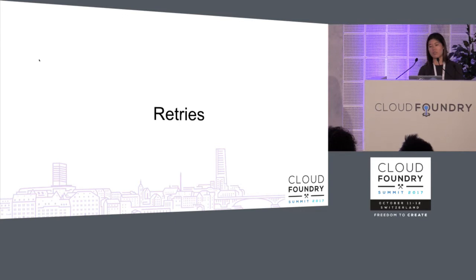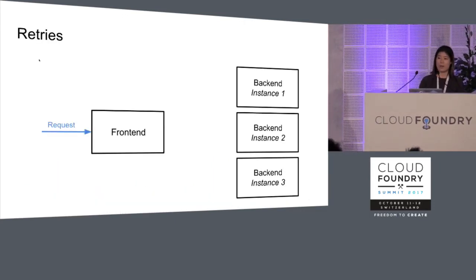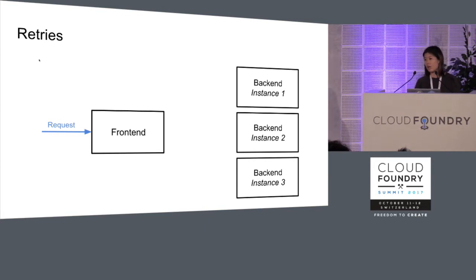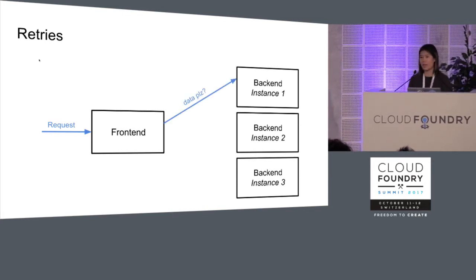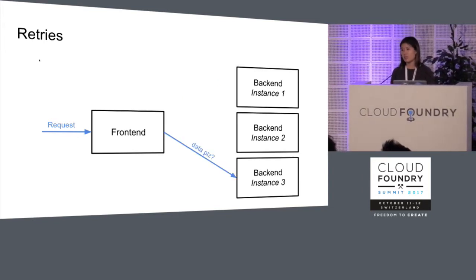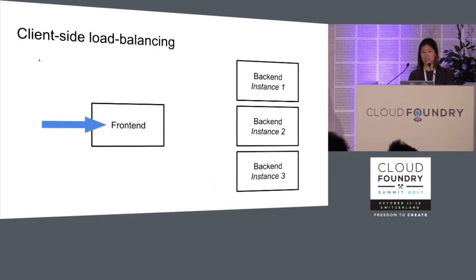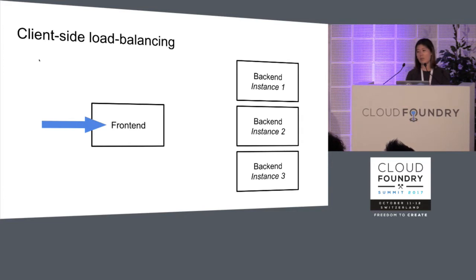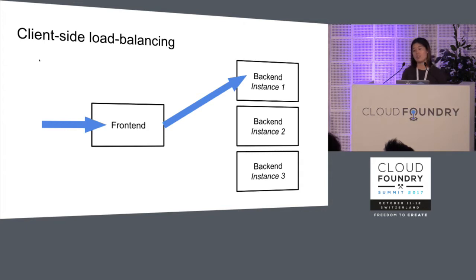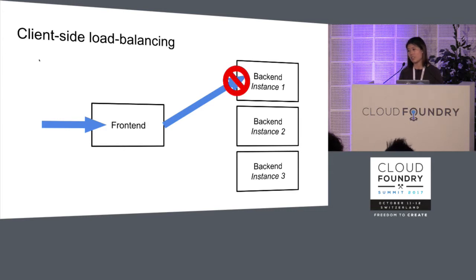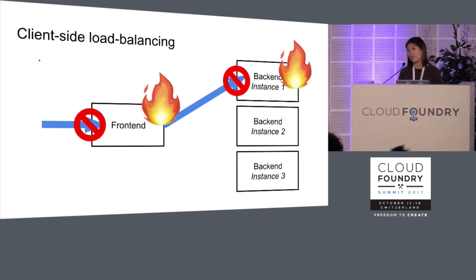Let's look at retries: if your front end asks for data from one back-end instance and it doesn't have it, you want to retry on another instance rather than just dropping the request. Another case is load balancing — if you have multiple instances of your back end, you don't want the front end sending all traffic to one instance. The whole point of multiple instances is scaling, and overloading one instance could cause it to catch on fire, and your front end too.